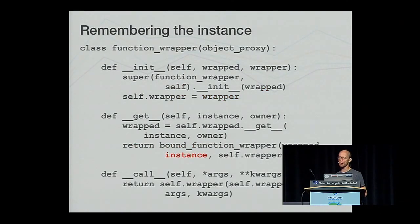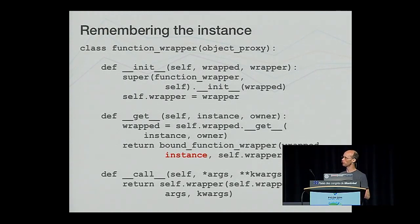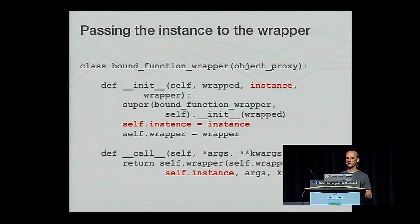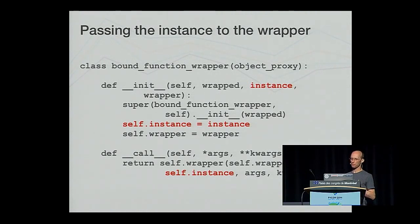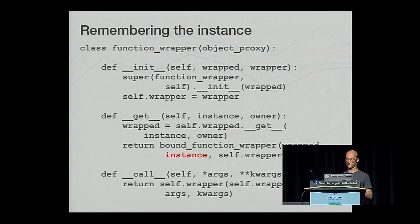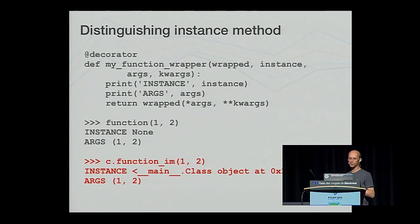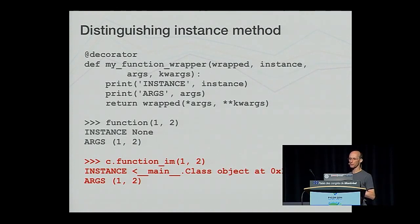To solve this problem, we can remember what the instance was that was passed to the __get__ method when it was called to bind the function. This can then be passed through to the bound wrapper when it is created. In the bound wrapper, the instance pointer can then be passed through to the decorator wrapper function as an extra argument. For the case of a normal function, we pass None for this new instance argument. This then allows us to distinguish between a normal function call and an instance method call within the one decorator wrapper function. The reference to the instance is passed separately, so we don't have to juggle with the arguments for an instance method.